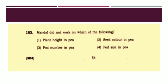The last question: Mendel did not work on which of the following? The options are: Plant height in pea, Seed color in pea, Pod number in pea, or Pod size in pea. The right answer is Option number three: Pod number in pea. So these are some of the most important questions repeatedly asked in agriculture trade. Thank you.